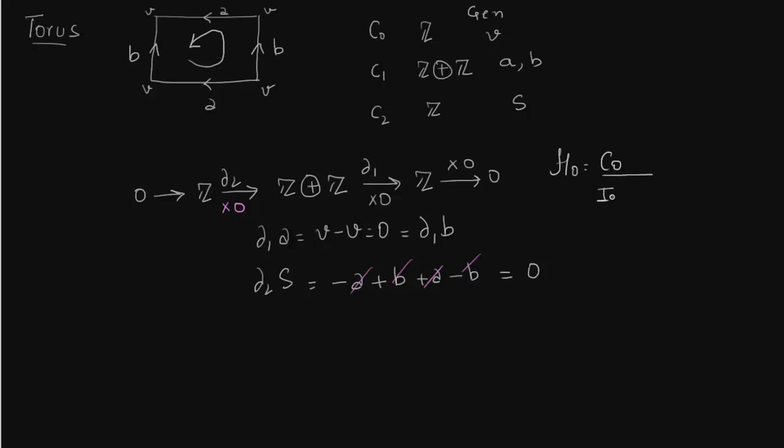Yeah, so now let us calculate the homology group. H_0 is always C_0 over image of delta one, that is because C_0 is always kernel of delta zero. So as we see, image of delta one is zero, it is just multiplication by zero. What is kernel of delta one? Now everything which is in C_2 and C_1 gets mapped to zero, so kernel of delta one is the entire thing, which is C_1, that is Z plus Z.